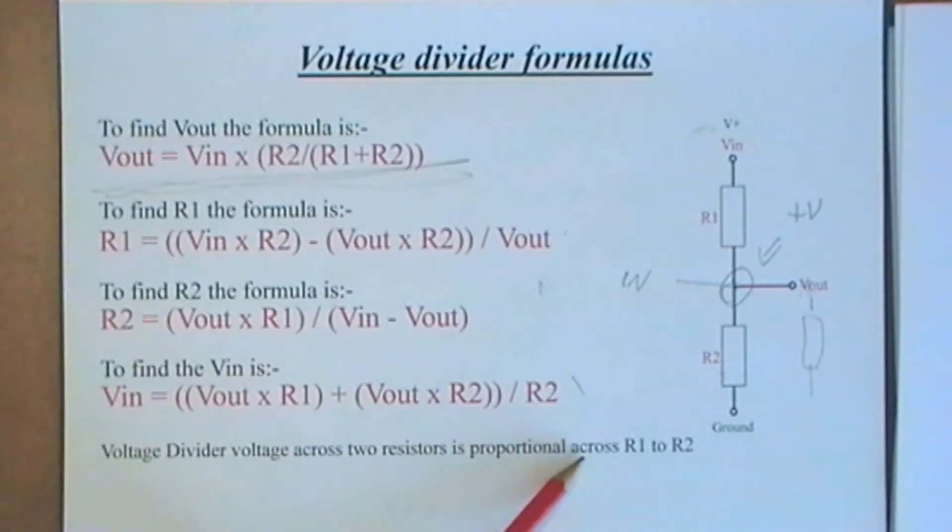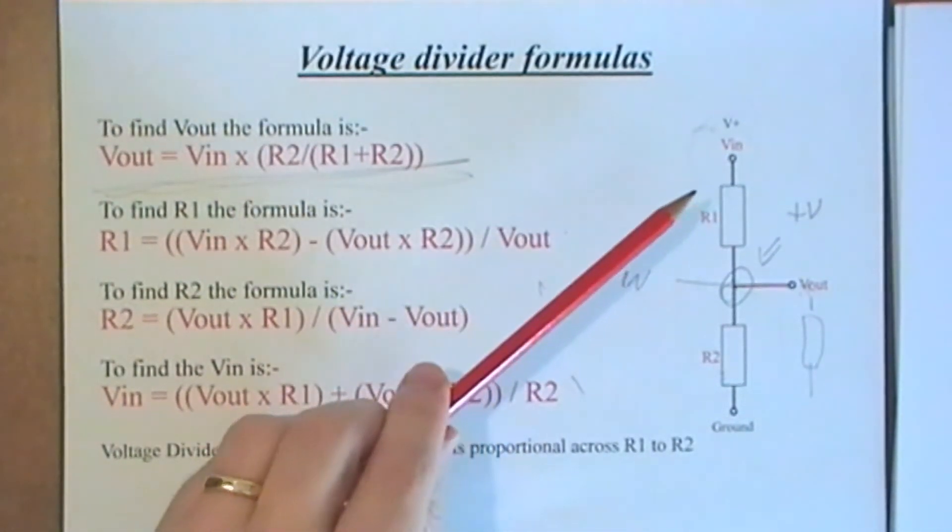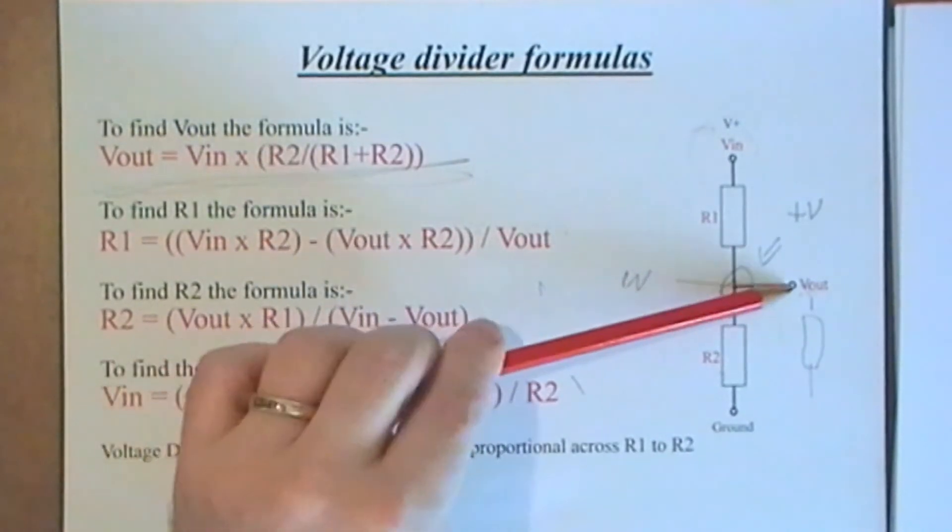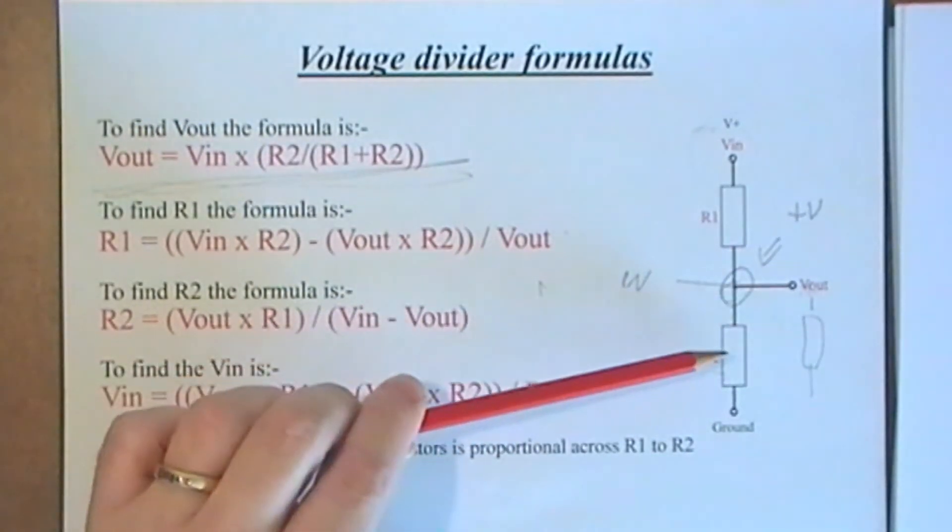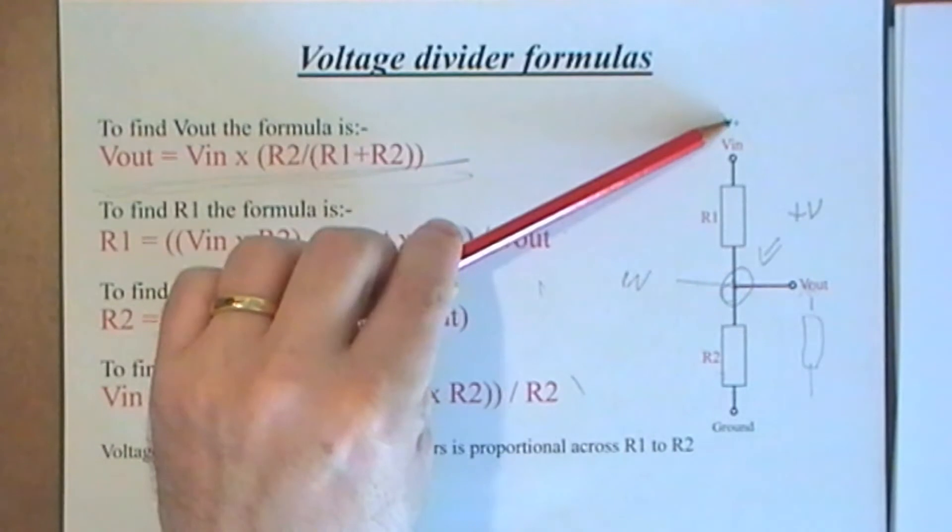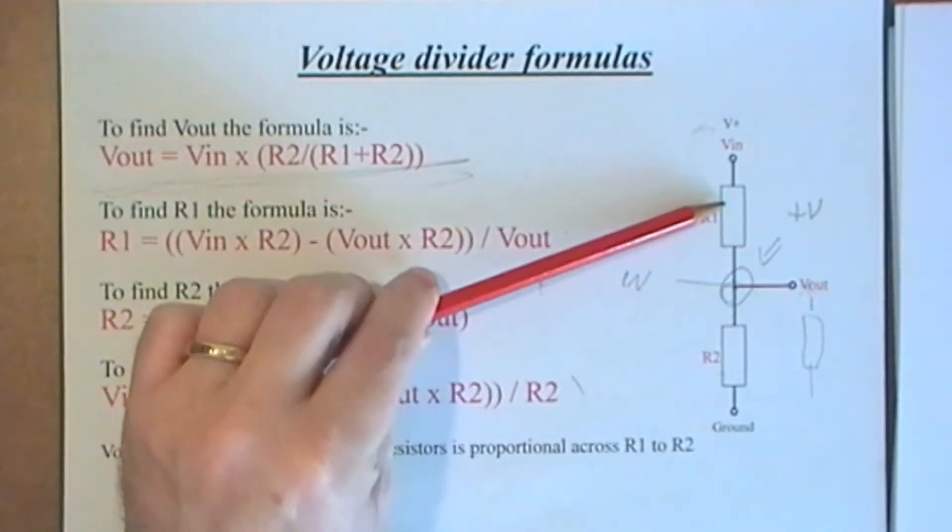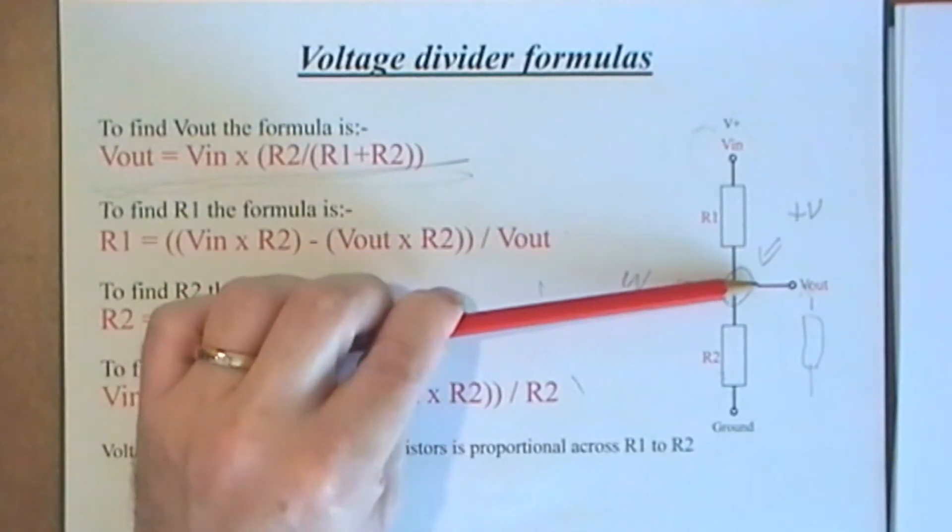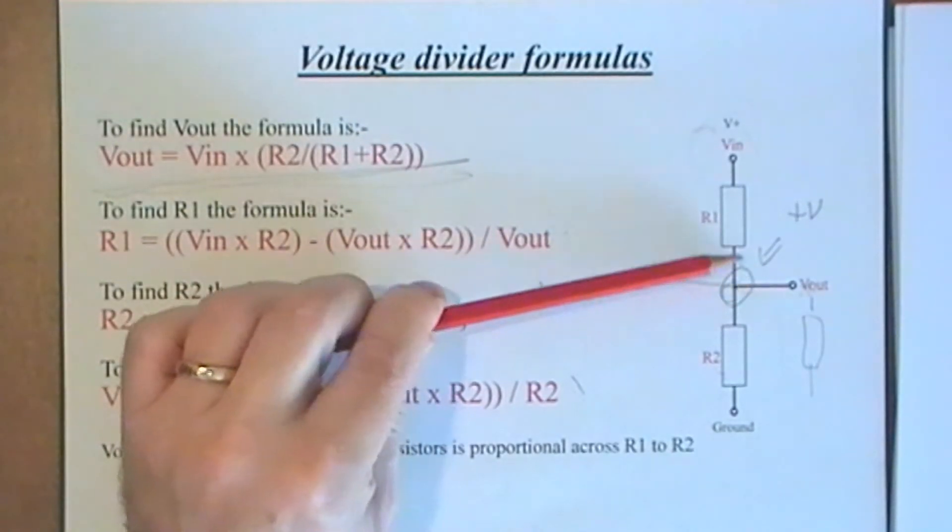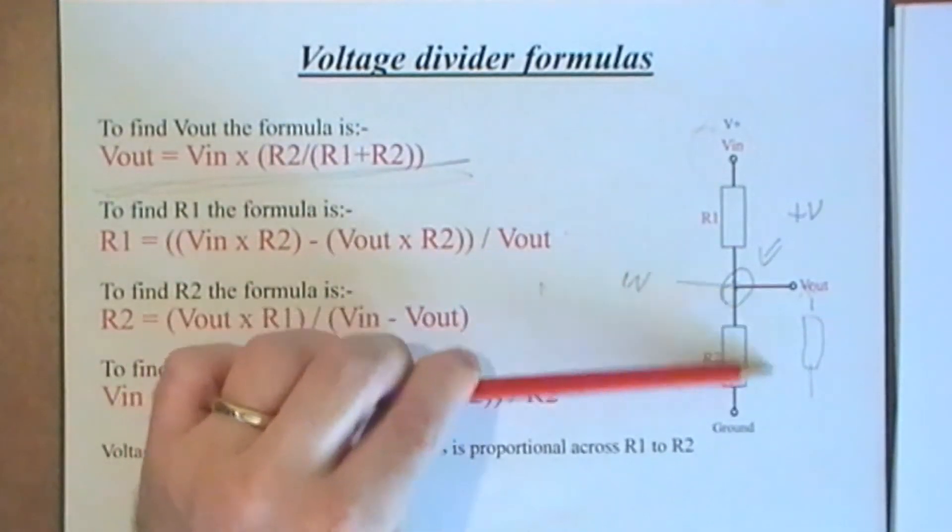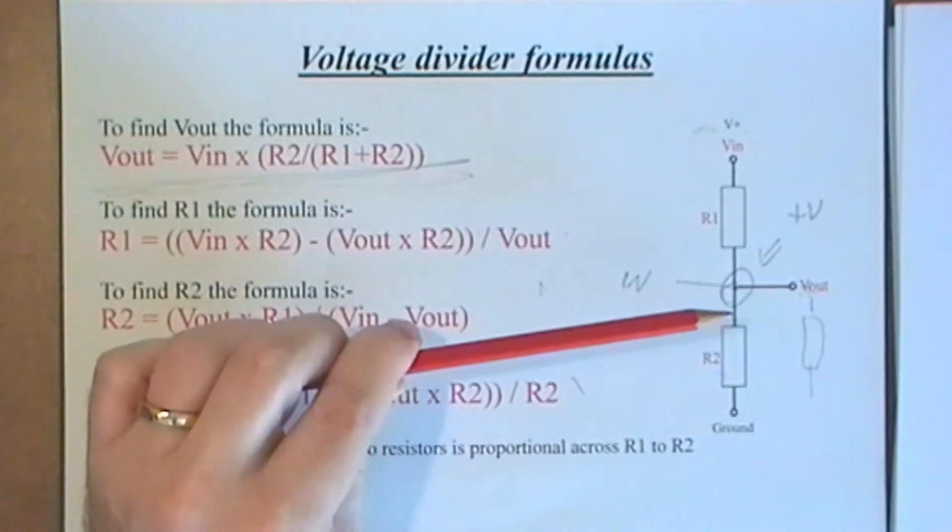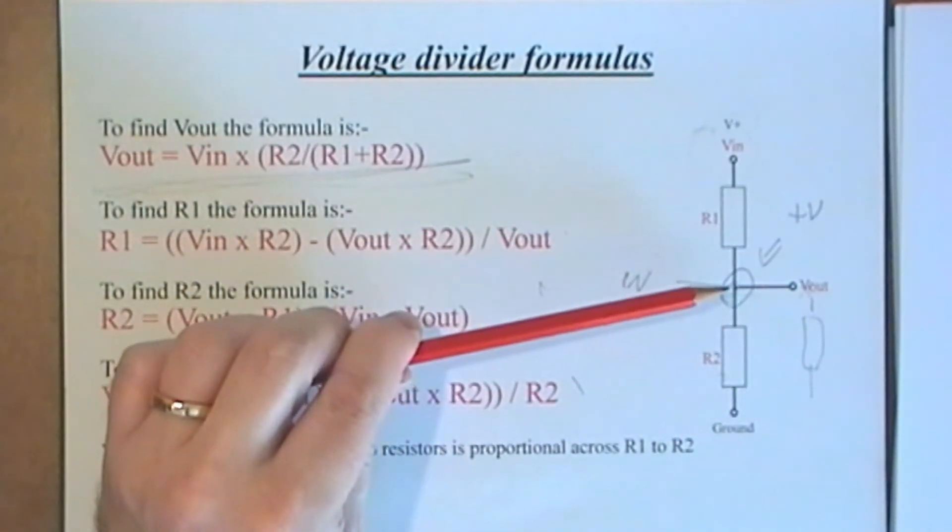The other thing about this as I've written here - voltage divider voltage across two resistors is proportional across R1 to R2. Let's say for instance we've got 12 volts here and you want 6 volts here, then that's half of that. So if these two resistors are the same, then you're going to get half the voltage out because it will drop half there and then half there.